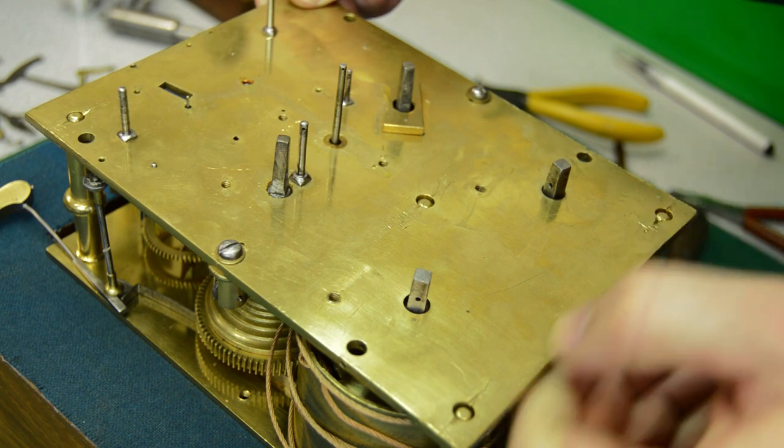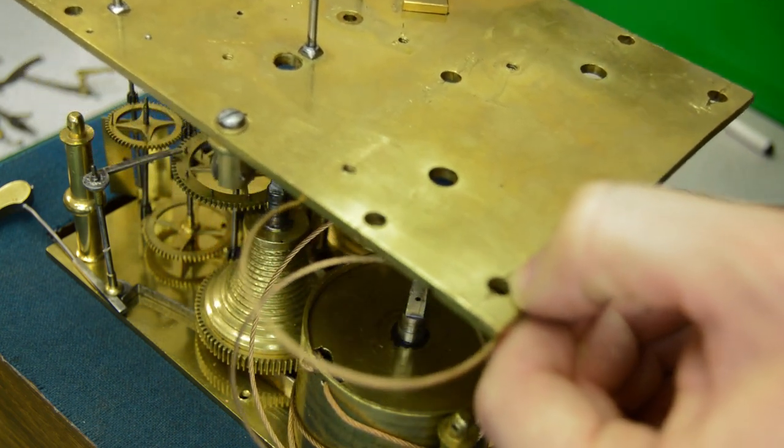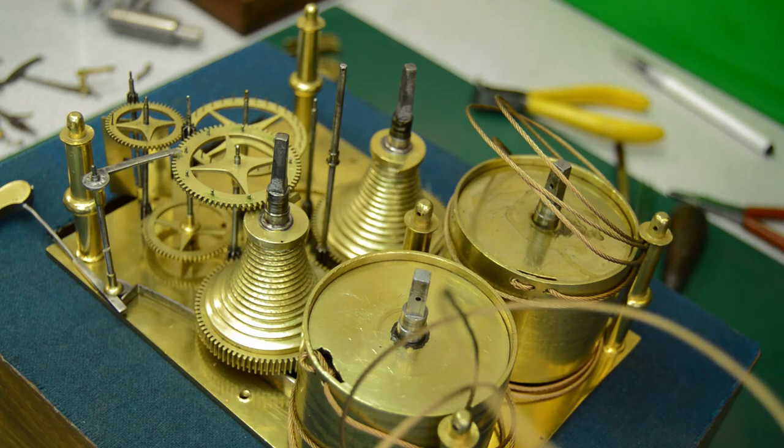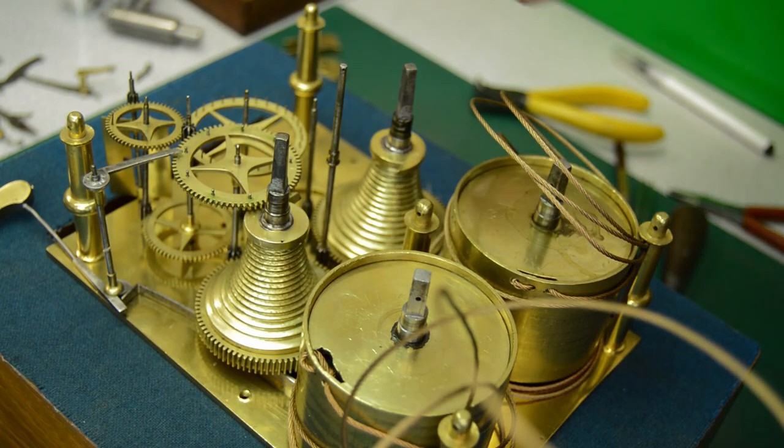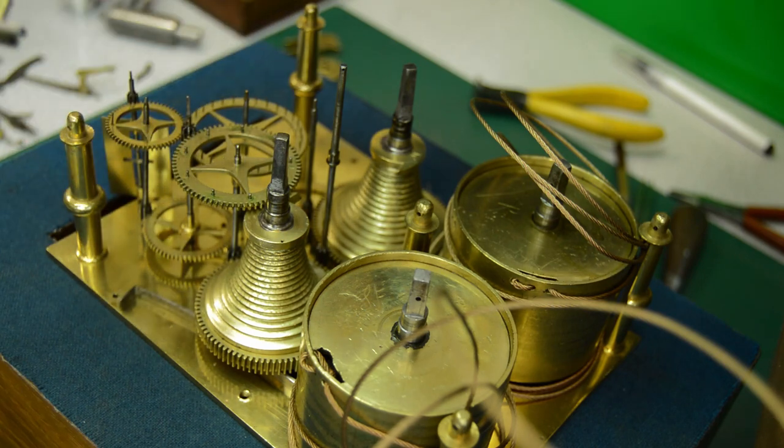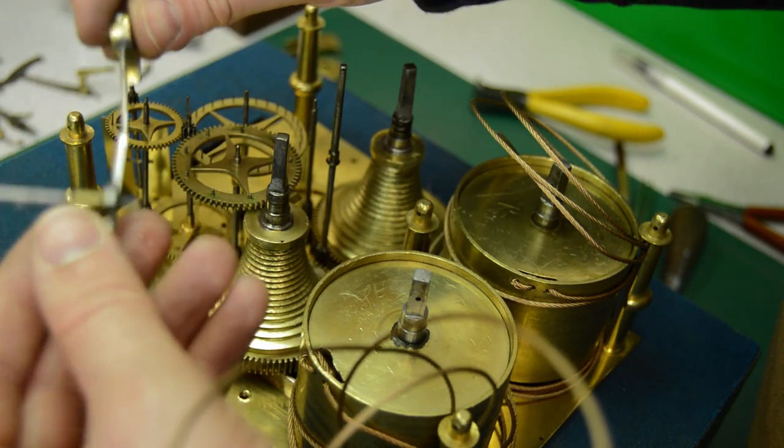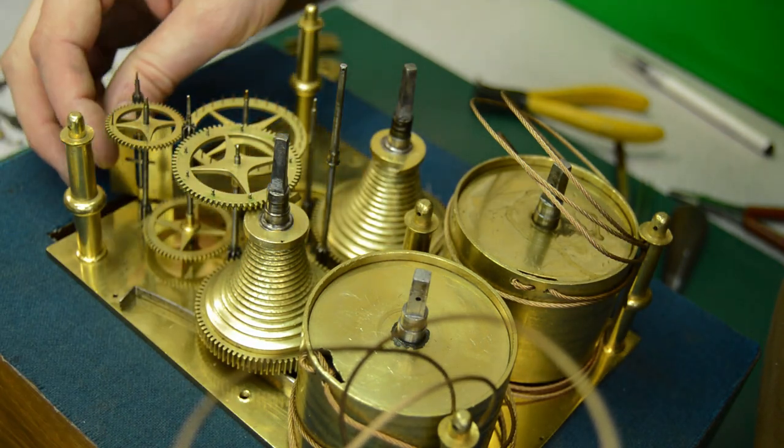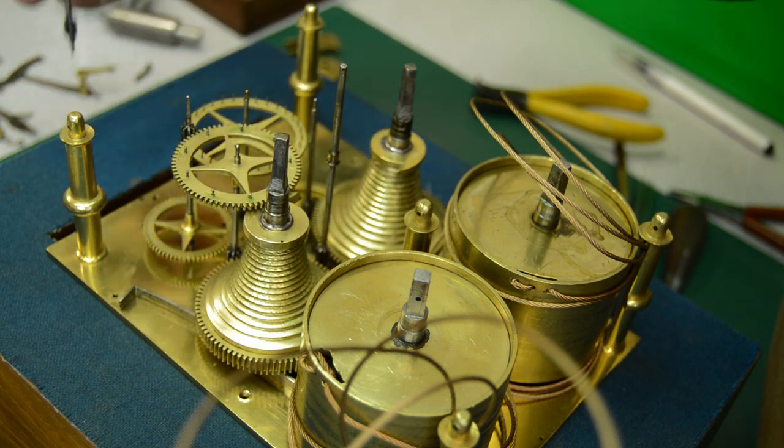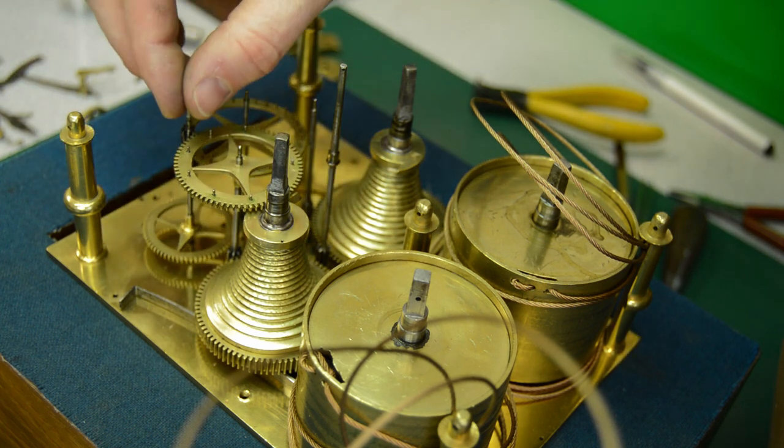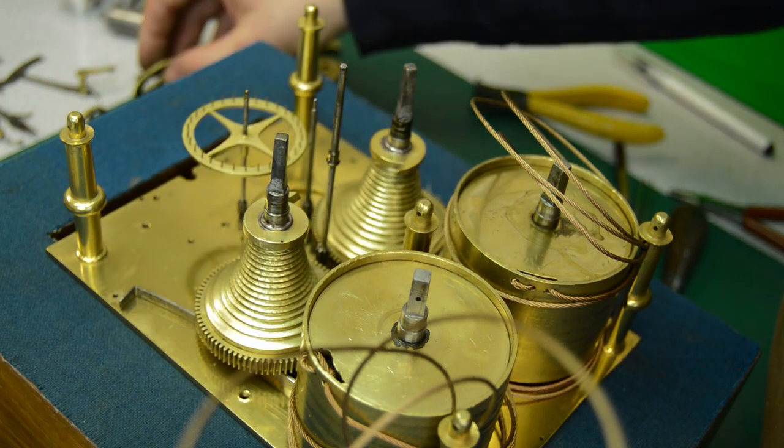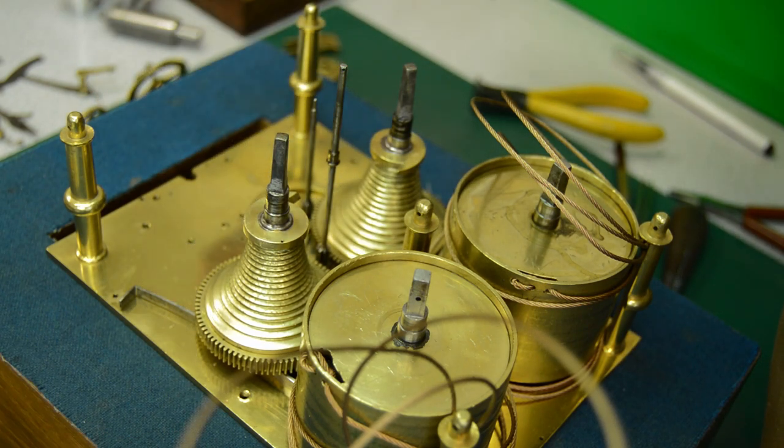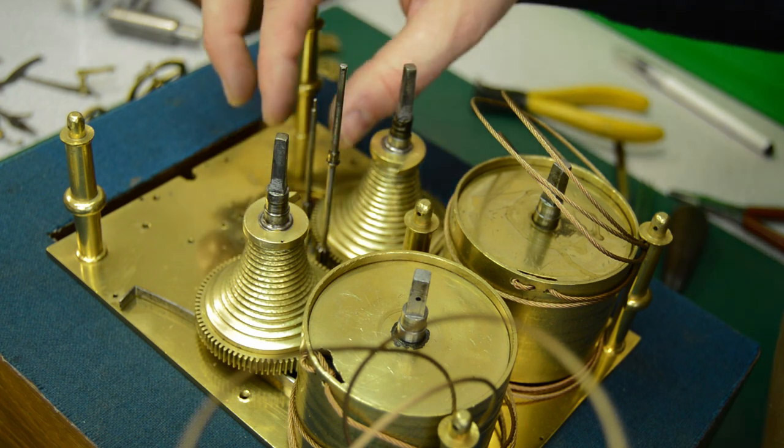Then lifting the front plate to reveal the condition of the trains underneath. I always like to inspect each part as I remove it. It gives you an idea of what's going on and any potential damage you can spot straight away. Obviously, closer inspection comes later but you get an idea of the initial condition.